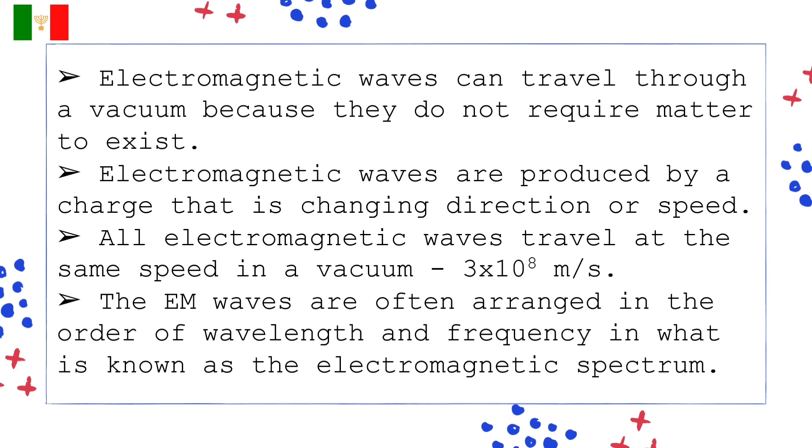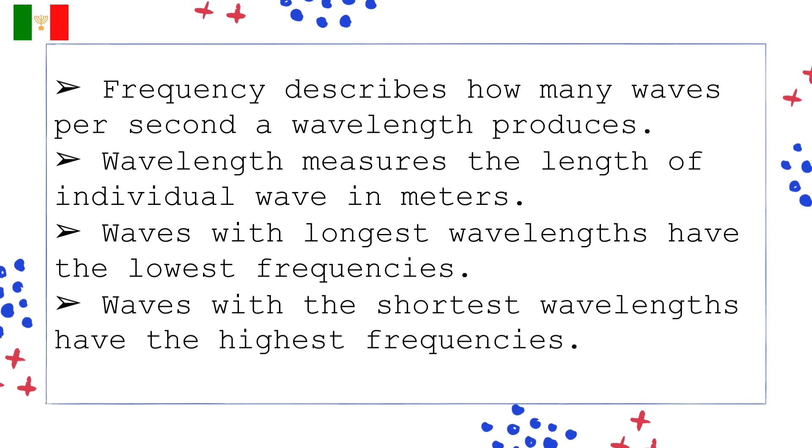All electromagnetic waves travel at the same speed in a vacuum and that is 3 times 10 raised to 8 meter per second. The electromagnetic waves are often arranged in the order of wavelength and frequency and what is known as the electromagnetic spectrum. Frequency describes how many waves per second a wavelength produces. Wavelength measures the length of individual wave in meters. Waves with longest wavelengths have the lowest frequencies. And the last one, waves with the shortest wavelengths have the highest frequencies.